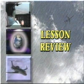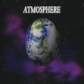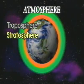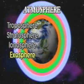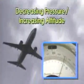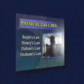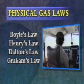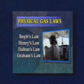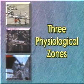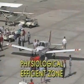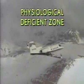To wrap up this lesson: the atmosphere is a gaseous envelope that supports and protects all life on Earth. It has four distinct divisions: troposphere, stratosphere, ionosphere, and exosphere. The atmosphere has decreasing pressure with increasing altitude, and all gases act in accordance with the physical gas laws. There are three distinct physiological zones: the physiological efficient zone, the physiological deficient zone, and the space equivalent zone.